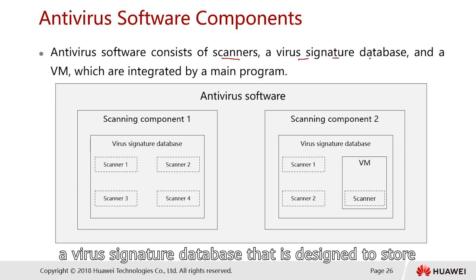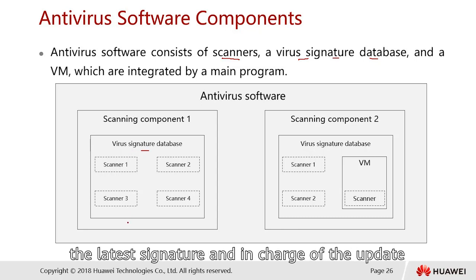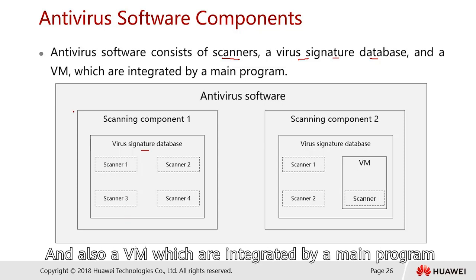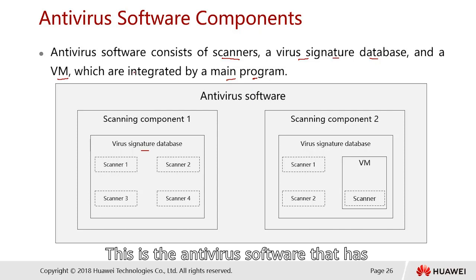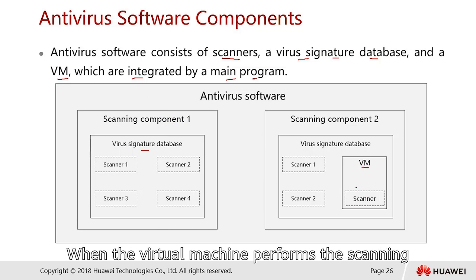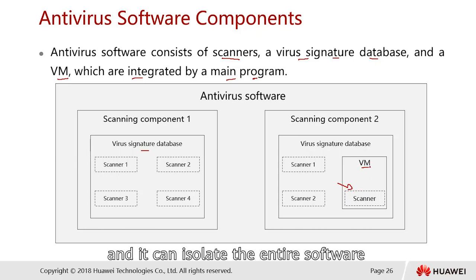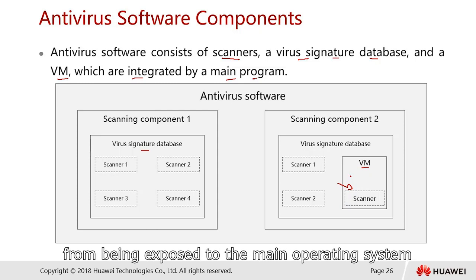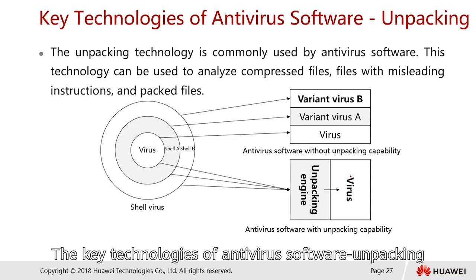The antivirus software consists of three components: a scanner, whose main function is scanning; a virus signature database, which stores the latest signatures and handles updates; and a virtual machine (VM) integrated by the main program. Some antivirus software uses a virtual machine concept that can isolate software from being exposed to the main operating system during scanning.